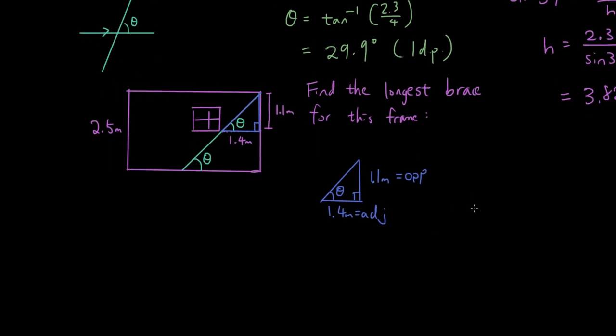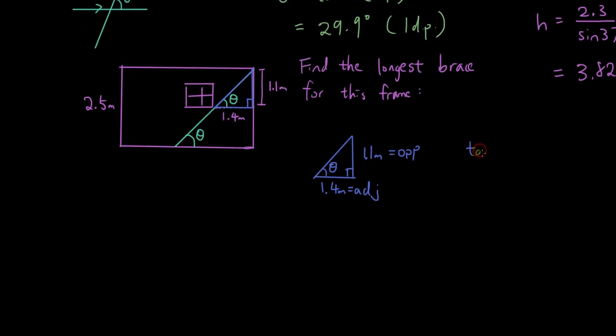So how do we figure out theta? Let's use tangent equals opposite over adjacent. Tangent theta equals 1.1 over 1.4. So theta equals inverse tan of 1.1 over 1.4.